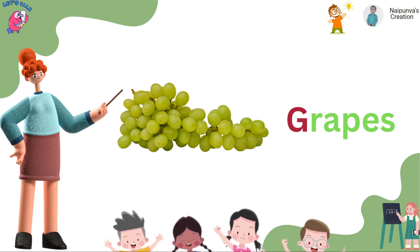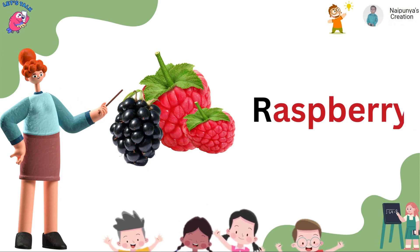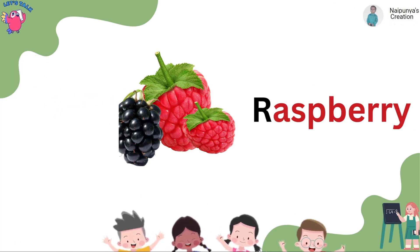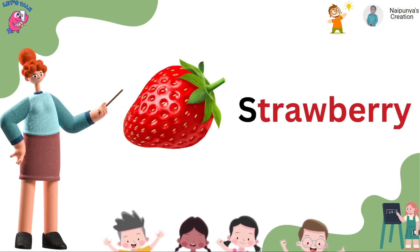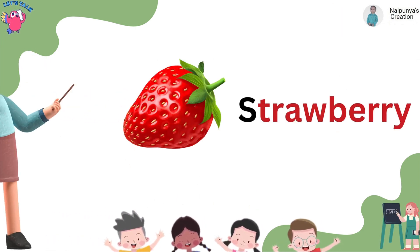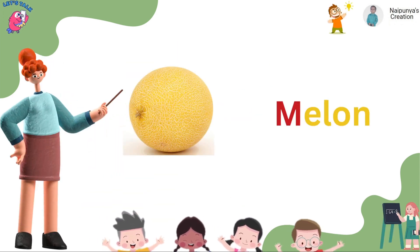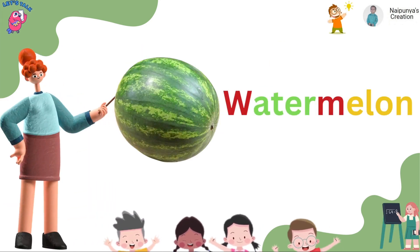This is a grapes. This is a raspberry. This is a strawberry. This is a musk melon. This is a watermelon.